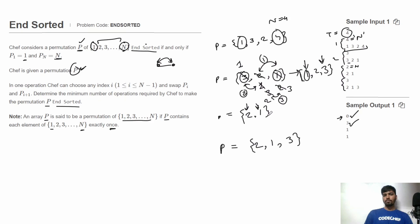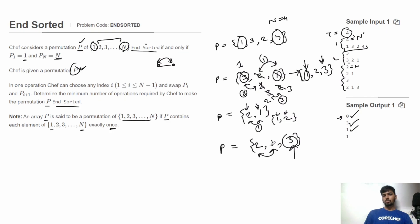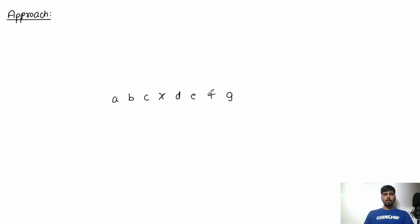In the third test case, P is 2 1. We just swap these two numbers to get 1 2, so 1 comes first and N=2 comes last — just one swap needed. In the fourth test case, P is 2 1 3. Here 3 is already at the last position, but 1 is not at the first position. We swap the first two numbers so it becomes 1 2 3, which is N-sorted. Only one swap is needed, so the output is 1.